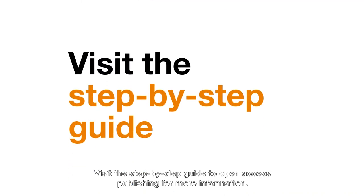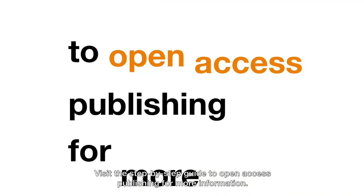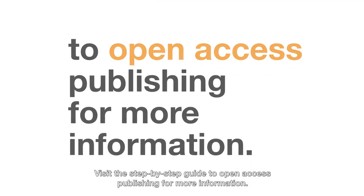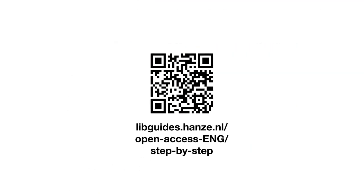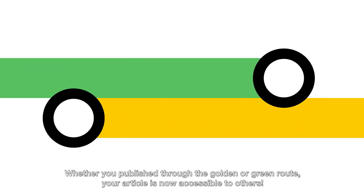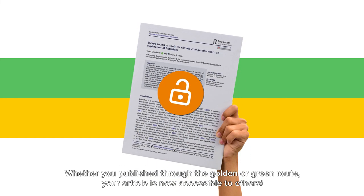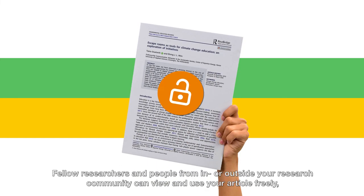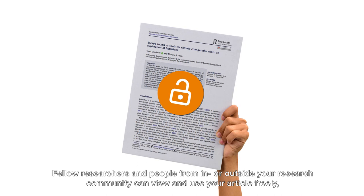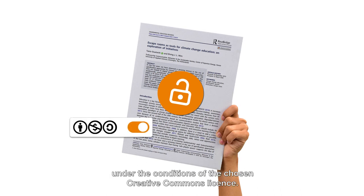Visit the Step-by-Step guide to Open Access Publishing for more information. Whether you published through the Golden or Green Route, your article is now accessible to others. Fellow researchers and people from in or outside your research community can view and use your article freely under the conditions of the chosen Creative Commons license.